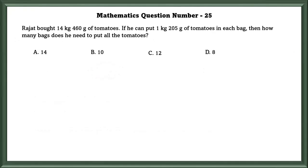Mathematics question number 25. Rajat bought 14 kg 460 grams of tomatoes. If he can put 1 kg 205 grams of tomatoes in each bag, then how many bags does he need to put all the tomatoes?